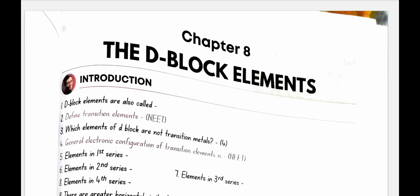D-block elements. Introduction. D-block elements are also called transition elements. Define transition elements. Transition element is defined as the one which has incompletely filled D orbitals in its ground state or in any of its oxidation states.